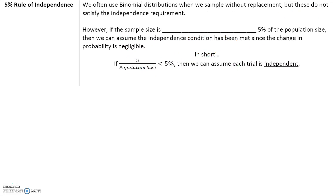Here's a 5% rule for independence. We often use a binomial distribution when we sample without replacement, but these do not satisfy the independence requirement. However, if the sample size is less than 5% of the population size, then we can assume that the independence condition has been met, since the change in probability is negligible. So if you have a million people and you're sampling a thousand of them, that's less than 5%, so we can assume that each trial is independent.